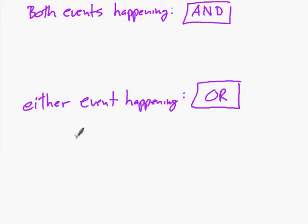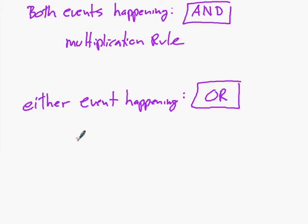In the OR case, either event could happen — it's a different calculation. What's the probability of getting a king of hearts or a three of clubs? Or if you roll two dice, what's the probability of the sum being five or six? When we deal with ANDs — both events happening — this is the multiplication rule, where we multiply the probabilities. For the OR, this is the addition rule.